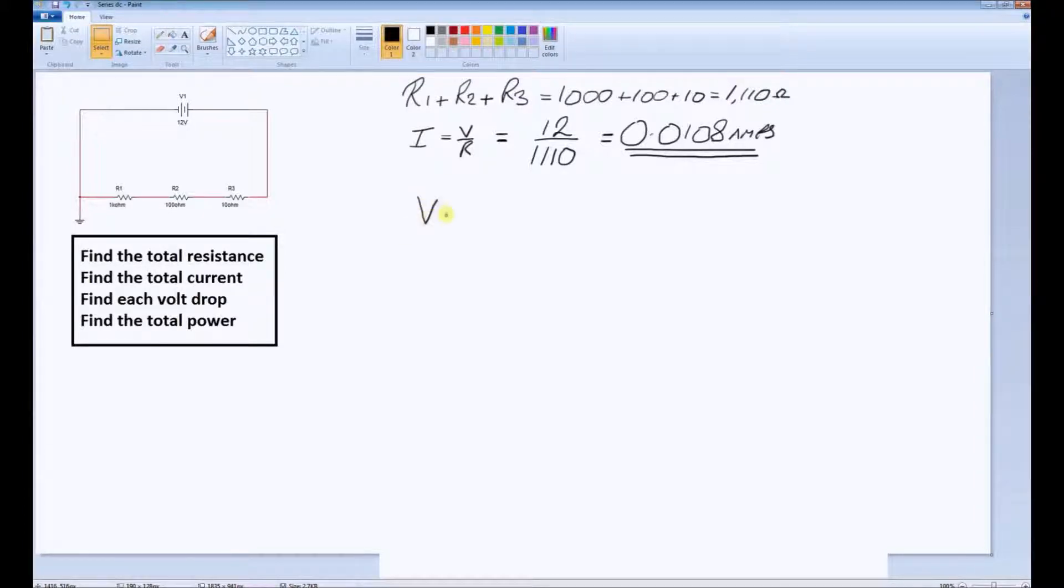Ohm's law tells us that voltage is equal to the current times the resistance. We have three resistors and a constant current.